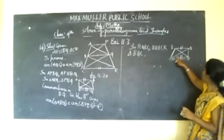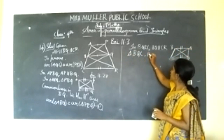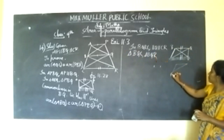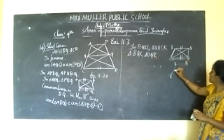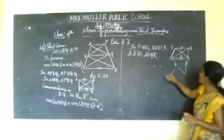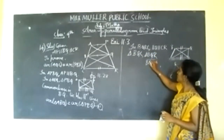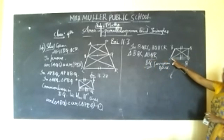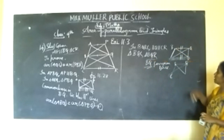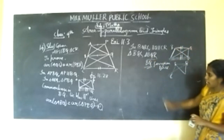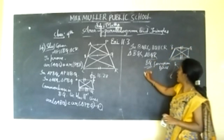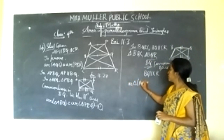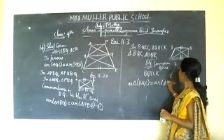When you take triangles BQC and BQR, BQ is the common base and it lies between the parallel lines BQ and CR. So you can conclude area of triangle BQC is equal to area of triangle BQR.